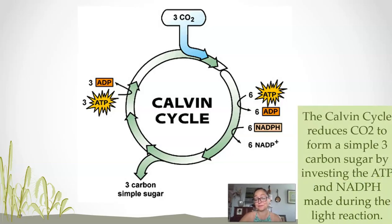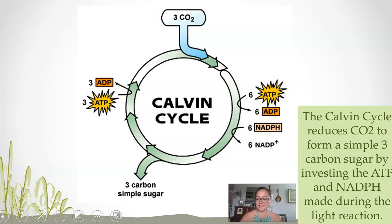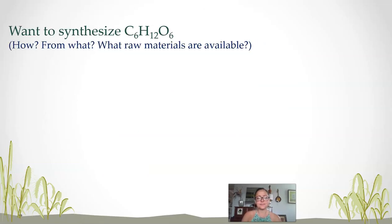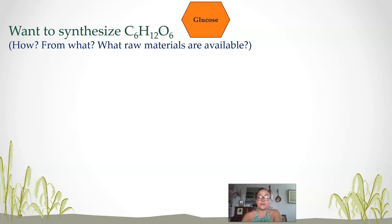To summarize: the Calvin cycle reduces carbon dioxide to form a simple three-carbon sugar by investing the ATP and NADPH made during the light reaction. Plants need to build all their own organic molecules as well as store energy. While ATP is a form of cellular energy, you don't really store energy in ATP — you store it in glucose, lipids, or similar molecules.